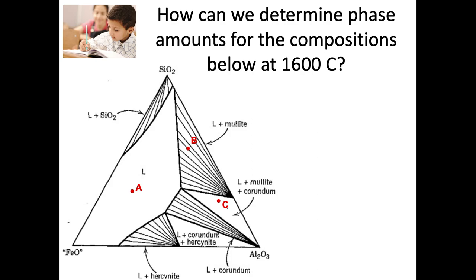I start with a question here. I have a ternary phase diagram — an isothermal section we did last time at 1600 degrees Celsius — and I have three compositions A, B, and C, labeled on the screen. My first question is: how do we determine the phase amounts at these compositions? Not the compositions themselves — we've already went over how to do that — but how do we get the phase amounts? Take a second to think about this, jot it down in the questions activity, and then we'll come back and talk about it.